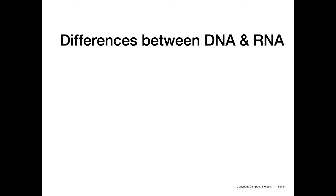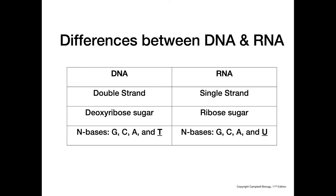Some basic differences between DNA and RNA: DNA is double-stranded, whereas RNA is typically single-stranded. All nucleic acids are made up of a phosphate group, a sugar, and a nitrogenous base. In DNA the sugar is deoxyribose, and in RNA it's just ribose.